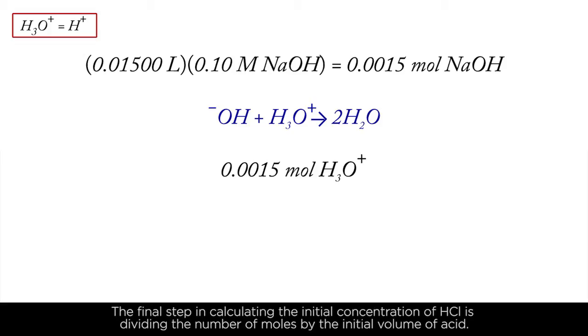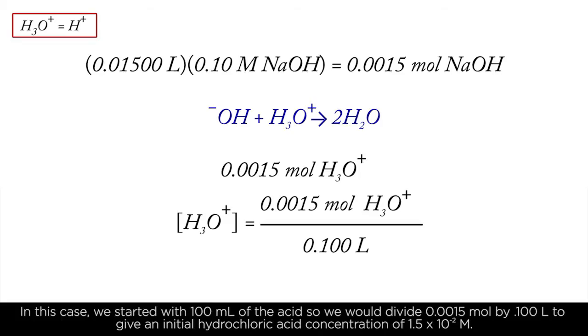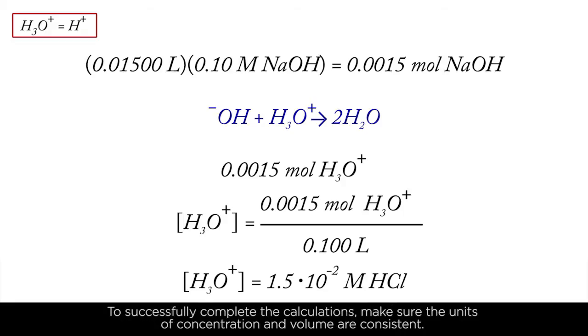The final step in calculating the initial concentration of HCl is dividing the number of moles by the initial volume of acid. In this case, we started with 100 milliliters of the acid, so we would divide 0.0015 moles by 0.1 liters to give an initial hydrochloric acid concentration of 1.5 times 10 to the minus 2 molar. To successfully complete the calculations, make sure the units of concentration and volume are consistent.